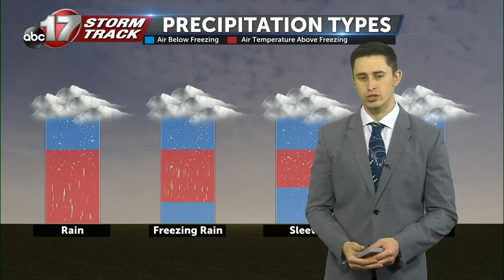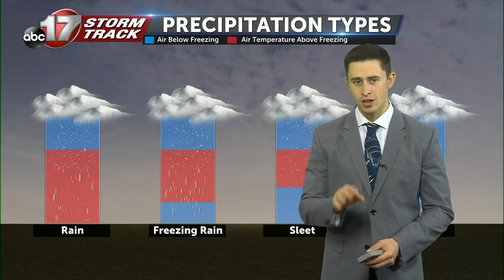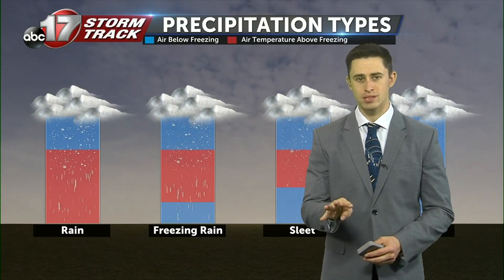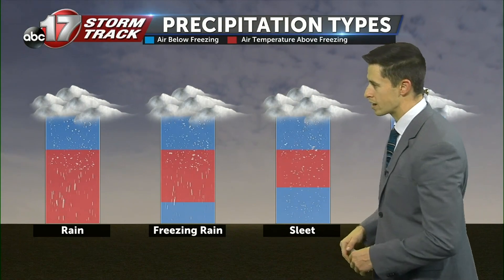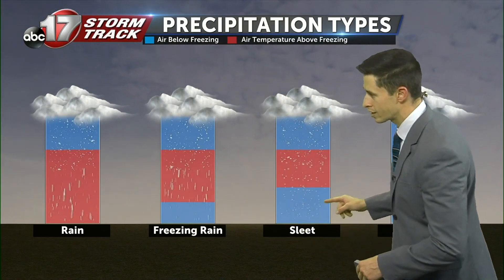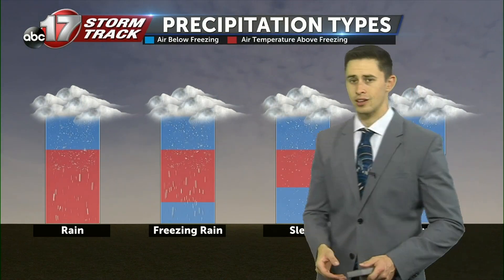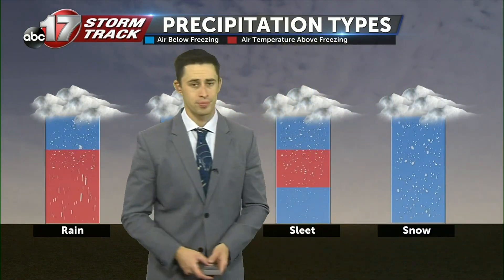Now in forecasting for winter precipitation, there's four types that we're looking at. Those are going to be rain, freezing rain, sleet, and a lot of people's favorite, snow.